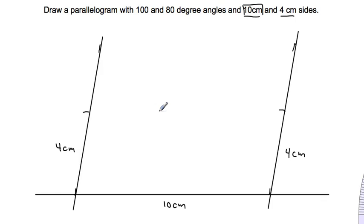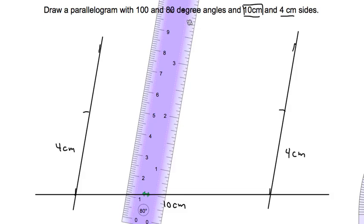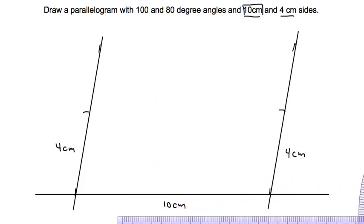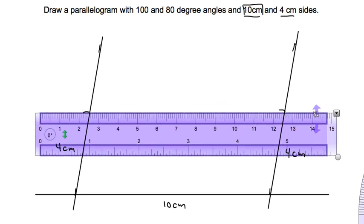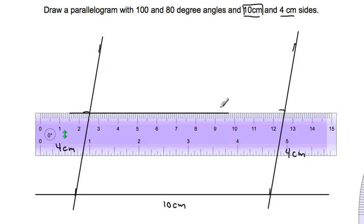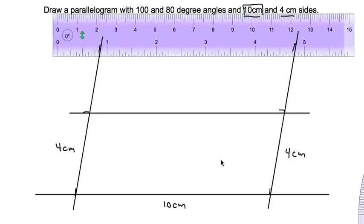And now I need to connect those two points and it will give me my top side. Bring back my straight edge. I'm going to be using it to connect. Make sure it goes through both points perfectly. And now I have a parallelogram with two 10 centimeter sides, two four centimeter sides, and angles of 80 and 100. And then this one's going to be 80 and this one's going to be 100.